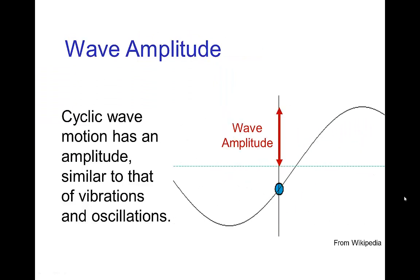Now one of the main characteristics of a wave for both transverse and longitudinal is the amplitude of the wave. When you have a cyclic motion, we have an amplitude, and with waves, it's similar to vibrations or oscillations. The amplitude is the measure from the extreme to the center.